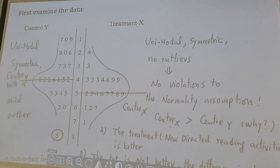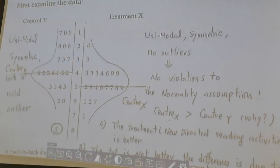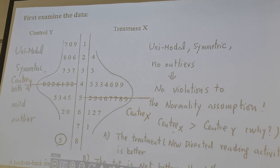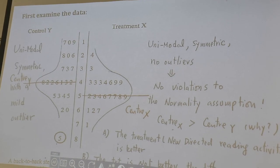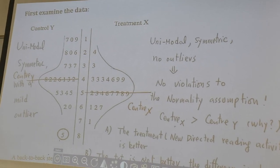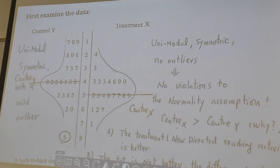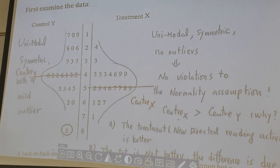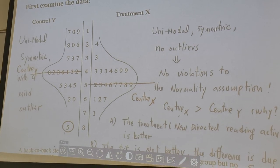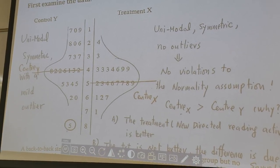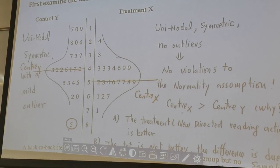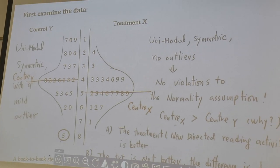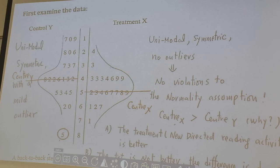After we make the model assumption — we assume x1 up to xn is a simple random sample from a normal population, and y1 to yn is also a simple random sample from a normal population. Furthermore, we assume x and y are independent. So we can summarize all the assumptions in one phrase: two independent simple random samples from a normal population.